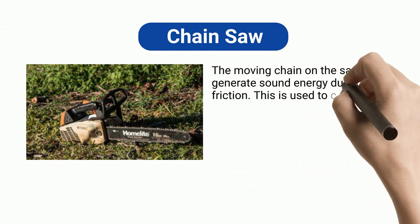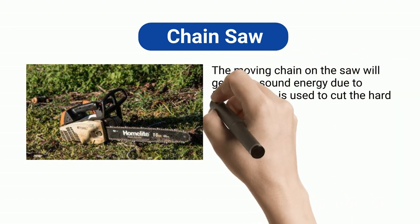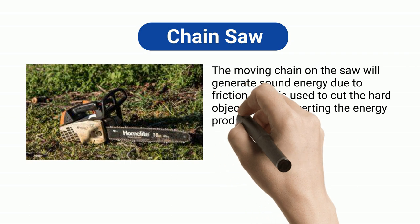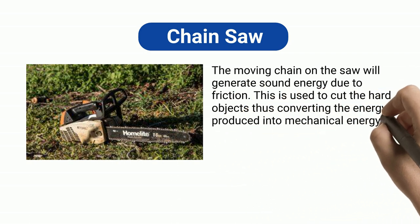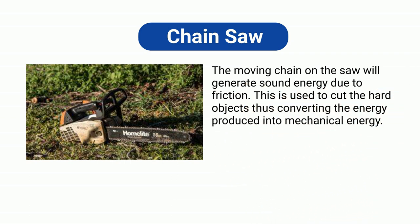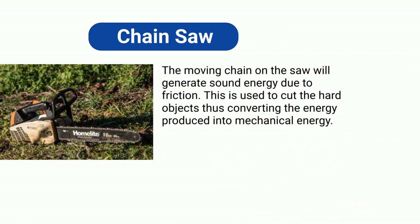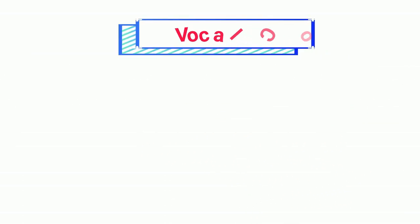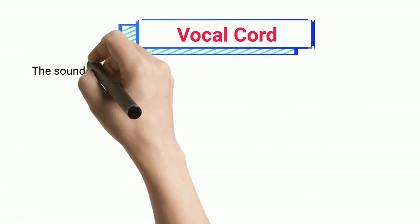Chain saw: The moving chain on the saw generates sound energy due to friction. This is used to cut hard objects, thus converting the energy produced into mechanical energy.